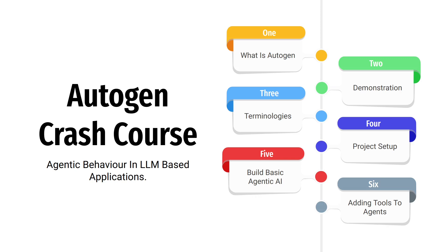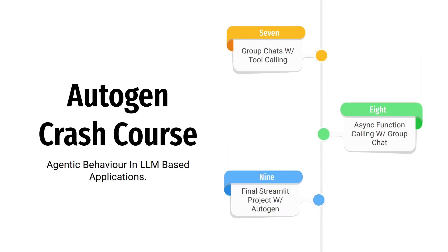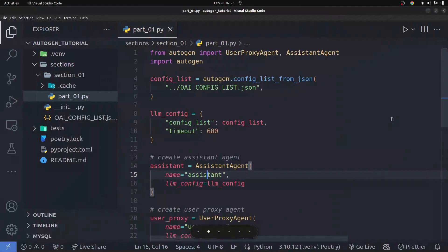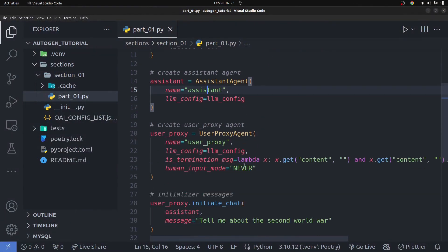Hello guys, welcome back to the second video in our introduction to AutoGen crash course. In this video we'll be looking at adding tools for agents. In the last video we looked at how to create agents — we had two different agents working together, with the user proxy acting as a human in the conversation between the agentic AIs. Now we're going to add different tools with AI agents.